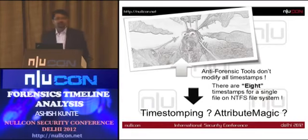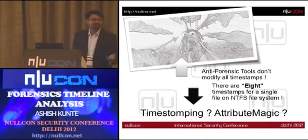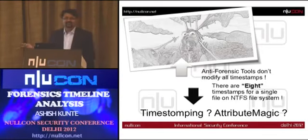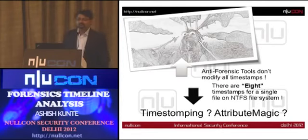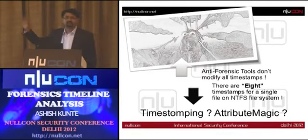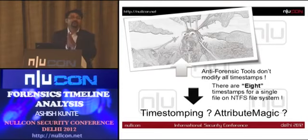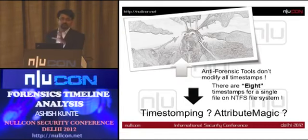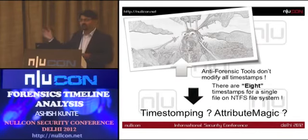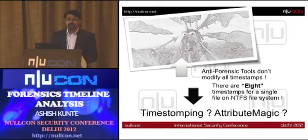Have you heard about timestomping or attribute magic? You can change timestamps or dates — many of us have backdated things by changing the system date. These anti-forensic tools can change timestamps, which creates confusion and complicates the forensic story. Time stomping was demonstrated at Black Hat 2005 using an automated tool. But here's the catch: these anti-forensic tools don't modify all timestamps.